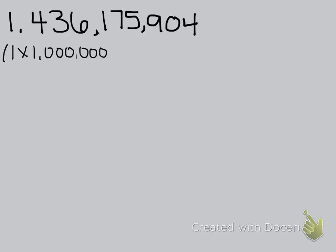The hard part can be making sure you have the right number of zeros. If I look after the 1, there are 9 digits, so I need to make sure I have 9 zeros. So 1 times 1 billion — that shows me that the 1 has a value of 1 billion, or it's worth 1 billion.